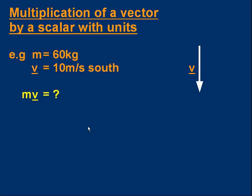Finally, let's talk about how we can multiply a vector by a scalar that does have units. A good example is working out momentum. If we have a mass of 60 kilograms and the velocity is 10 meters per second going south, I can draw an arrow to represent the velocity. The question is: what is the value of m times v? In this case we're taking the vector v and multiplying it by the scalar m, which has units of kilograms. The answer is 600 kilogram meters per second, going south.